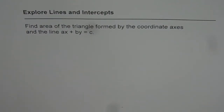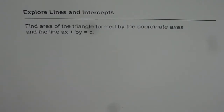Let us explore lines and intercepts. The question is: find the area of the triangle formed by the coordinate axes and the line ax plus by equals to c. We have taken a very general form of the equation of a line, and with the help of this example we will try to find the area formed by the coordinate axes and the line. Then we will do some practice problems based on this particular example.